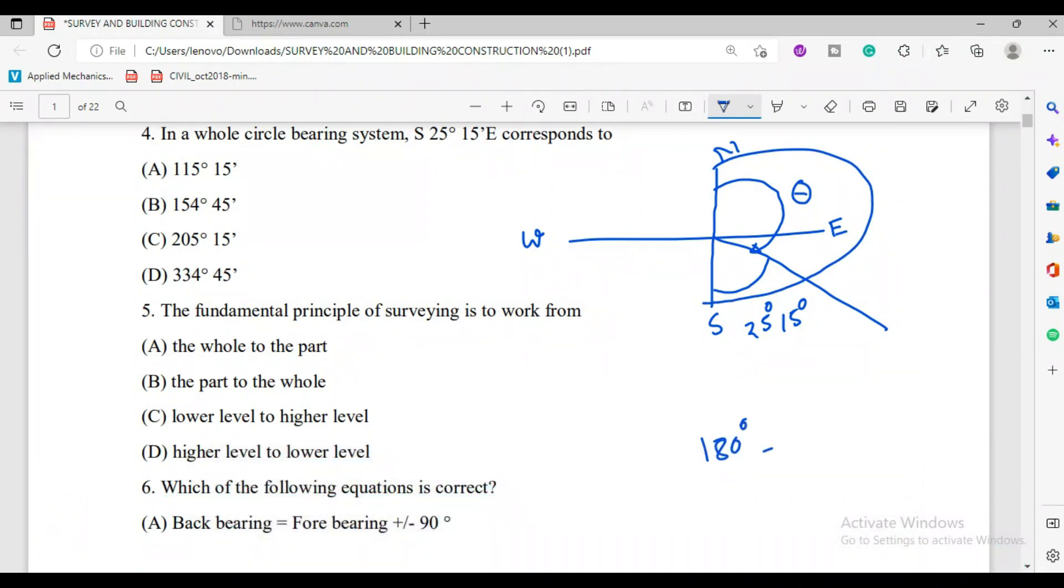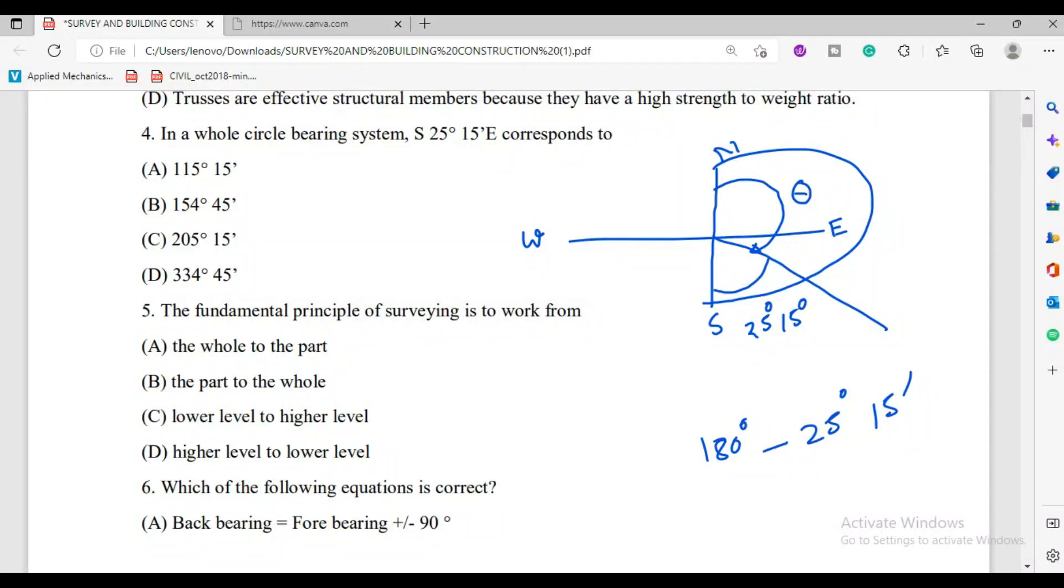Therefore, 25 degree 15 minutes deduct kori diyo. The value is equal to the whole circle bearing of S 25°15' E. So it is 180 degree minus 25°15'. That is around 154 degree 45 minutes. So option B is correct. Just a conversion from the quadrantal bearing system to the whole circle bearing system.